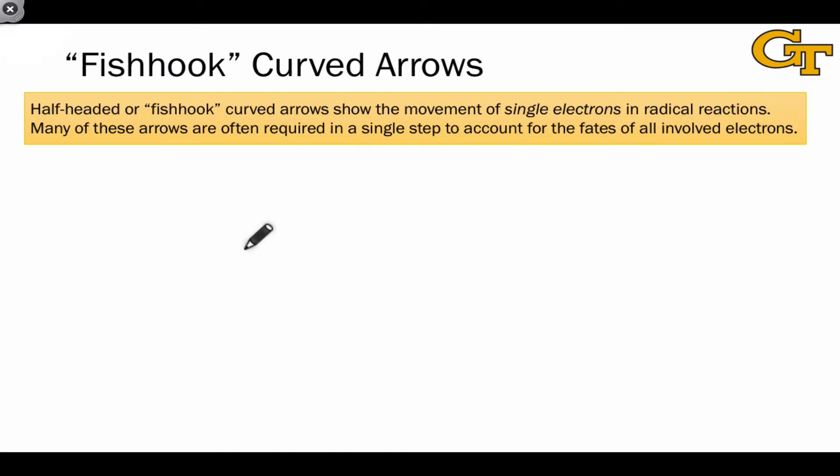Finally, let's talk about how we represent electron flow in radical reactions. Most curved arrows in organic chemistry show the movement of two electrons, but if we leave out part of the head of a curved arrow, by convention, that represents the movement of a single electron, and you'll see these a lot in radical reactions.